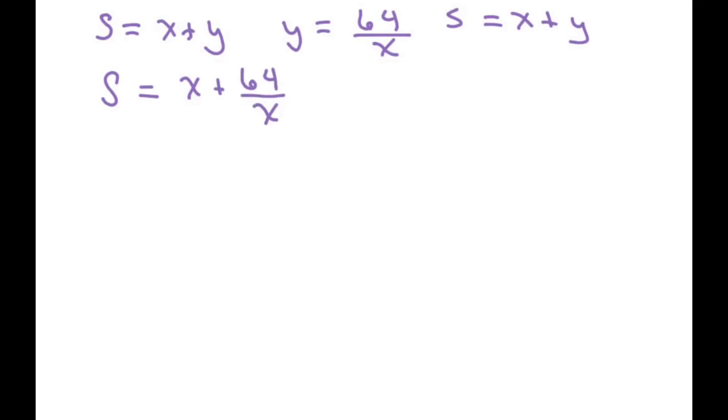Therefore, we can take the derivative of S with respect to X. When you do that, you're going to get 1 minus 64 over X squared, and you set that to zero.